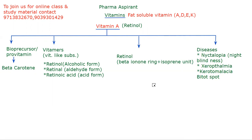Now let us discuss the important function of Vitamin A. Its most important role is pigment synthesis. We will discuss its biosynthetic mechanism, from which many important points arise. The key discussion is about the biosynthetic pathway of Vitamin A.